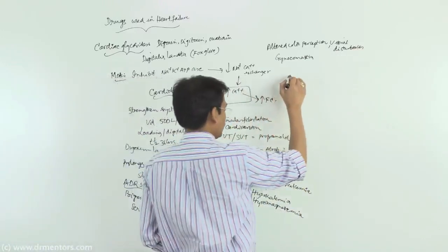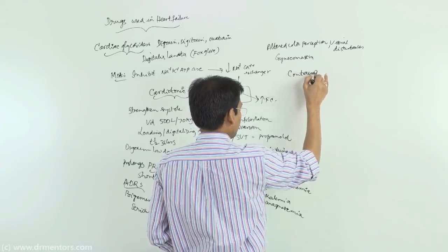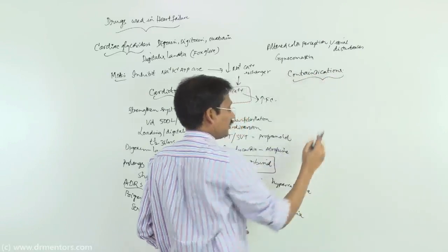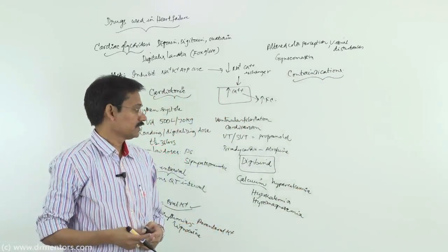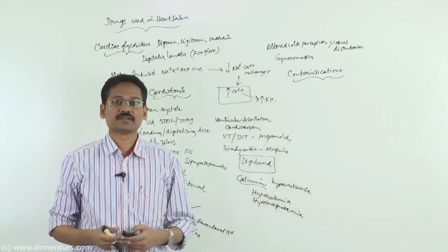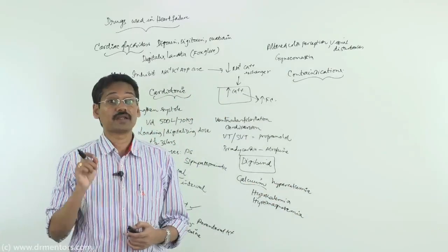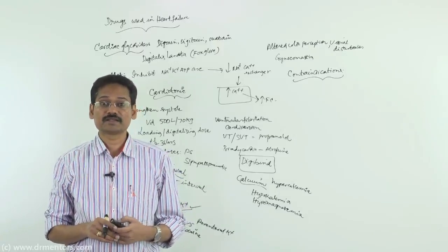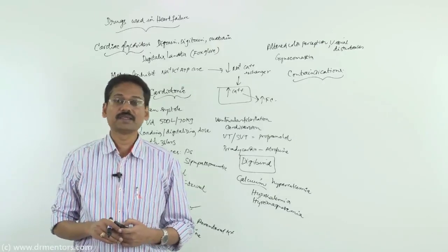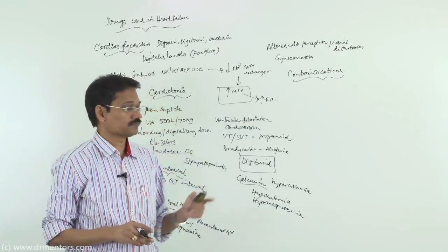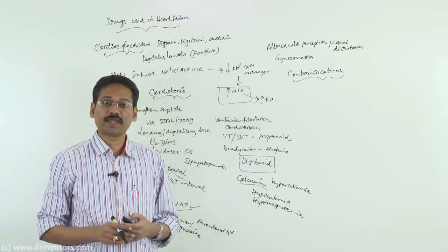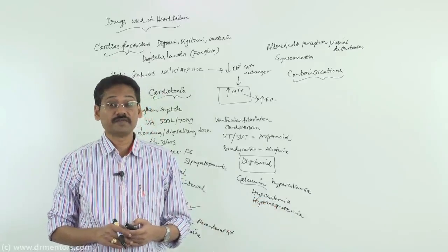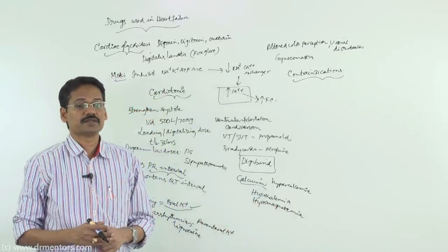Contraindications for digoxin use include hypercalcemia, hypokalemia, hypomagnesemia, myocardial infarction, hypothyroidism, severe myocarditis, and Wolff-Parkinson-White (WPW) syndrome.